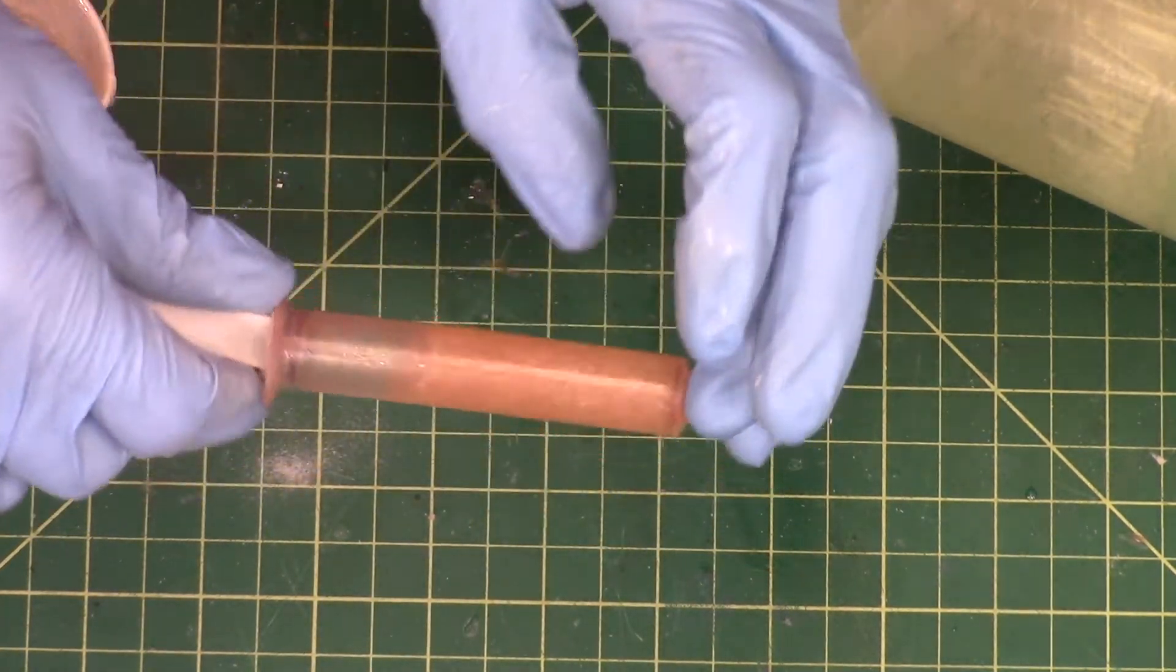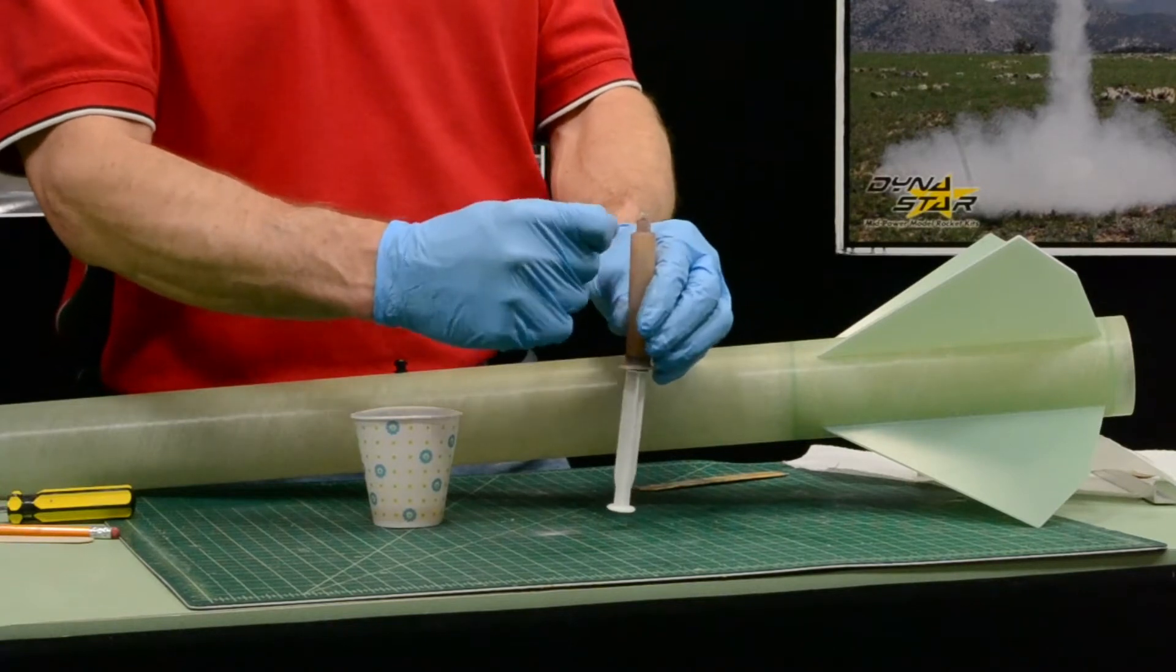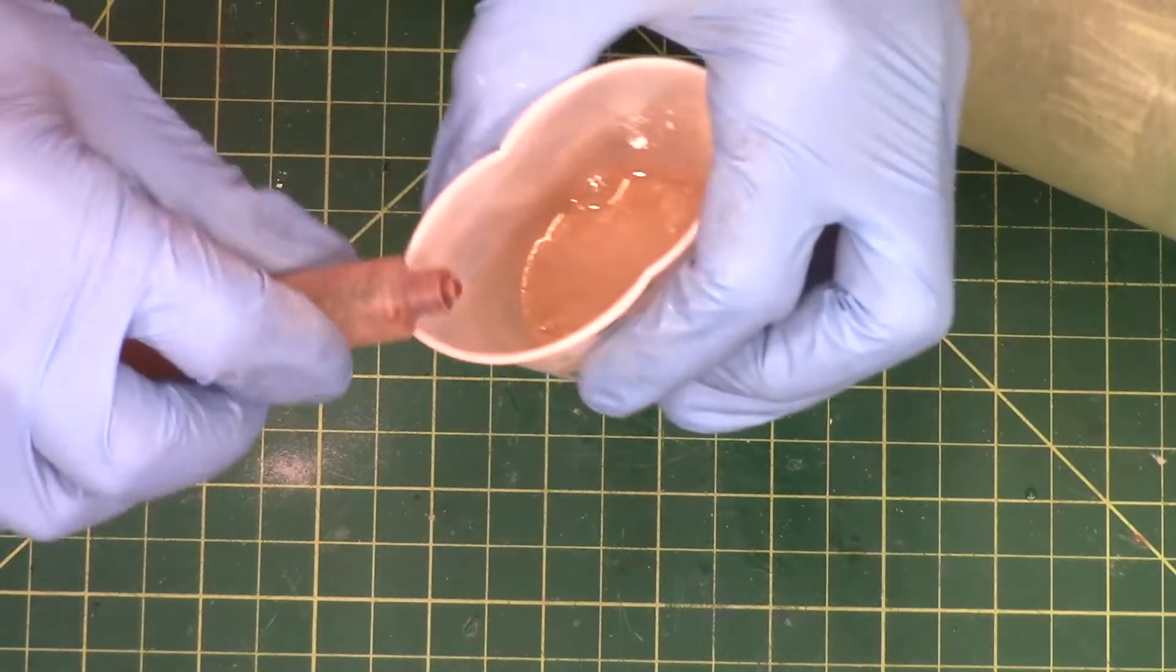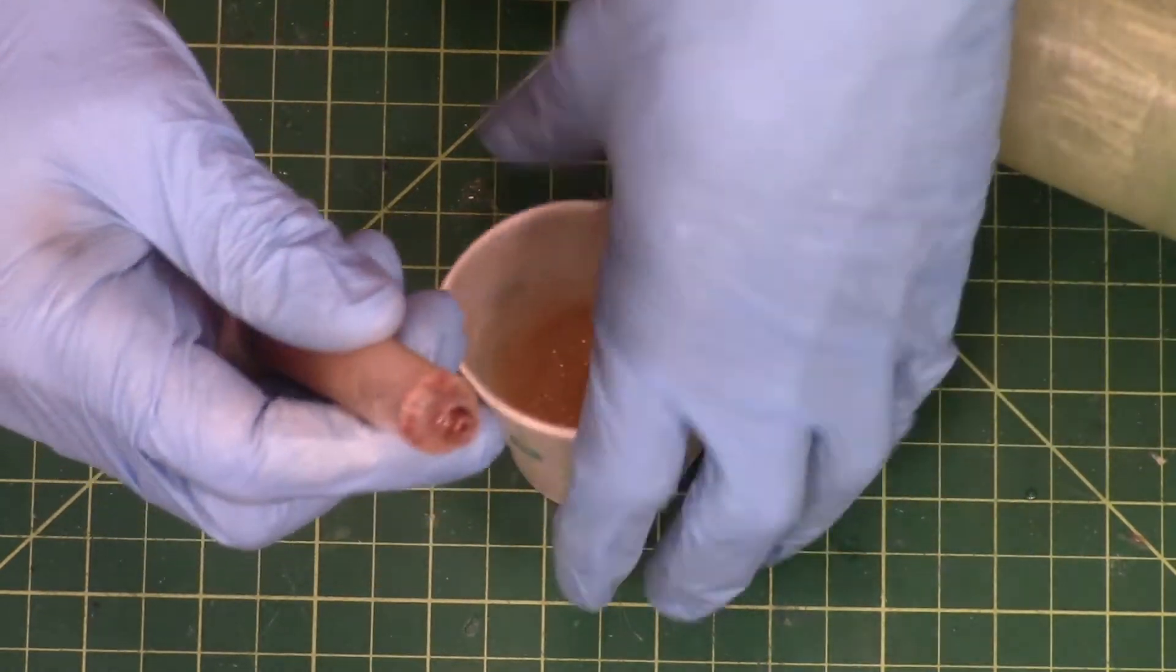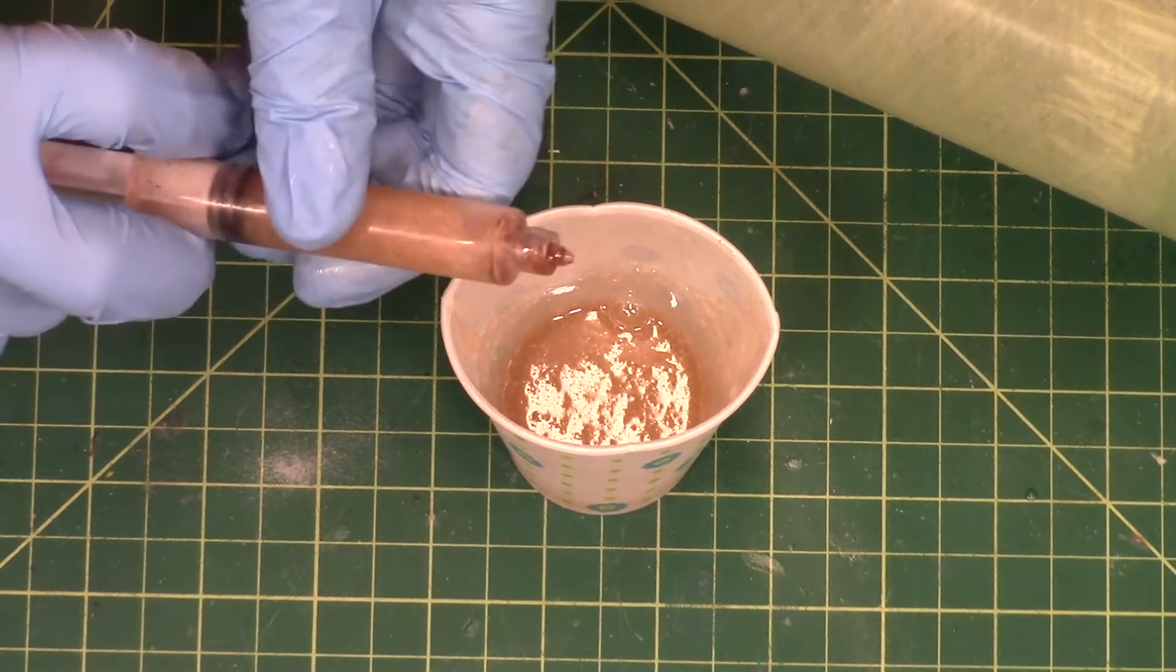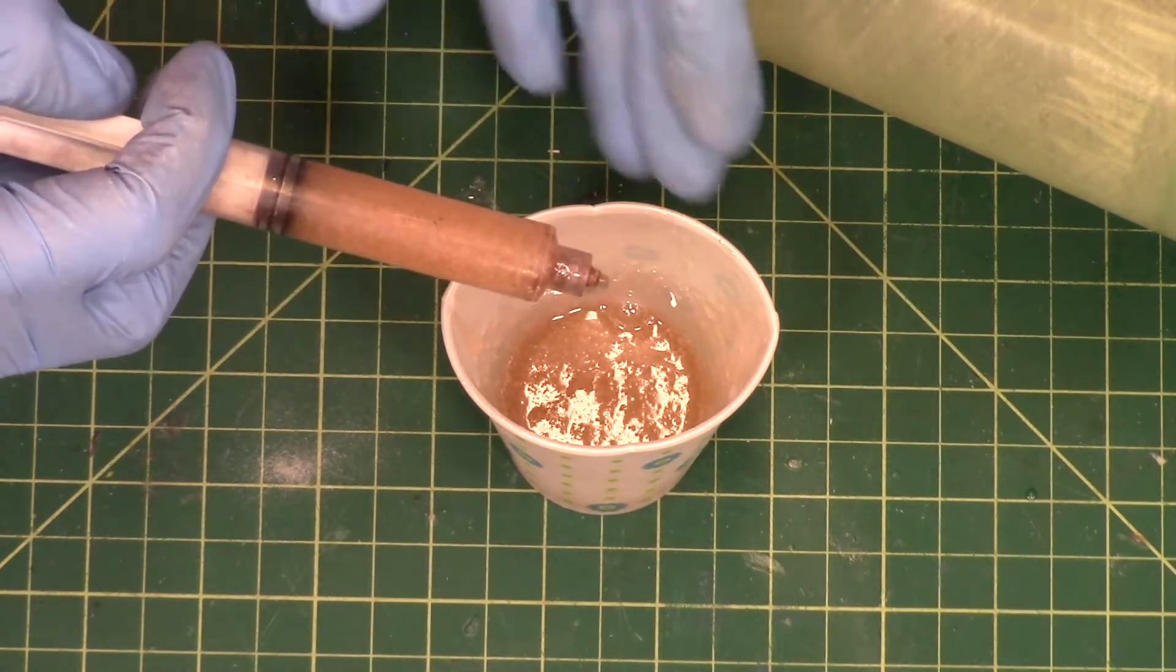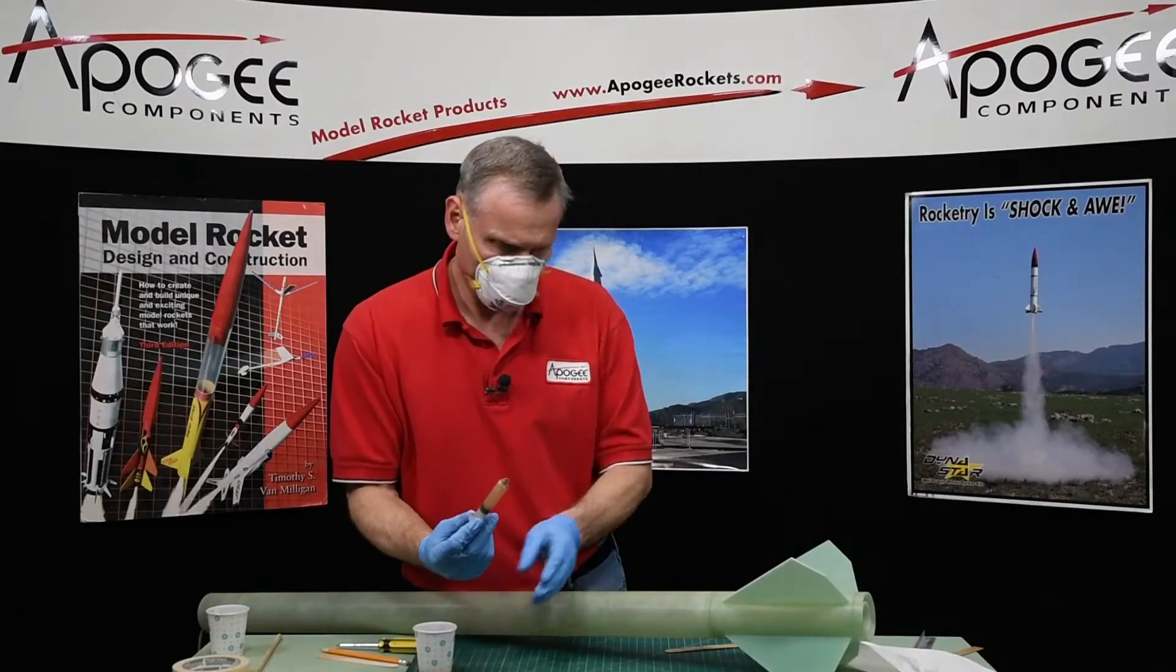And I'll put the plunger in and I'll flip it over and wait for the air bubble to come to the top. It's coming out a little bit. And push that air bubble out. Okay, so now I got a syringe full of epoxy.